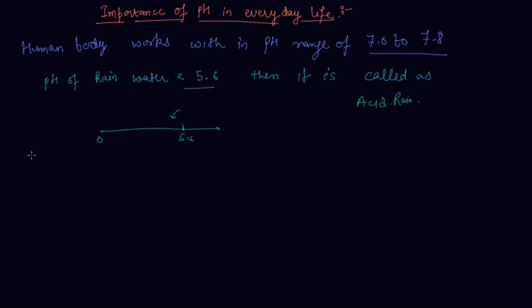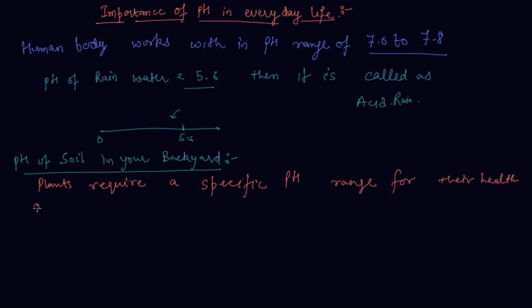Now we will discuss about pH of soil in your backyard. Plants require a specific pH range for their healthy growth. To find out pH for the healthy growth of a plant you can collect the soil from various places and check the pH. This is your assignment, you need to check the pH of the soil at your backyard.